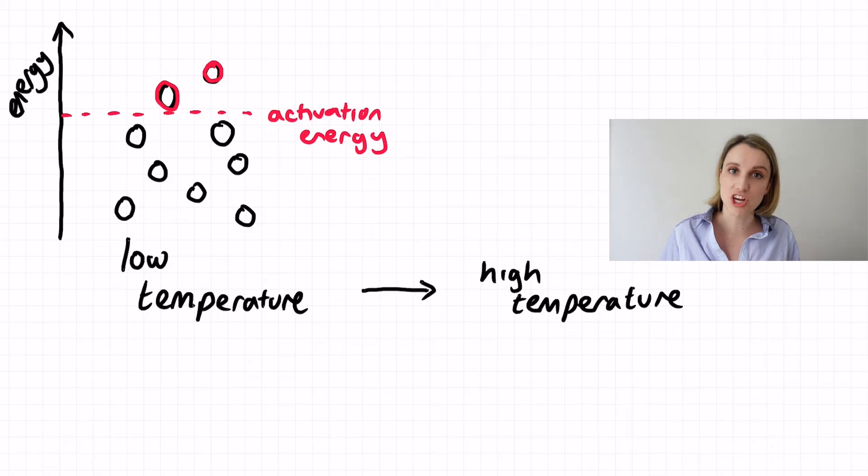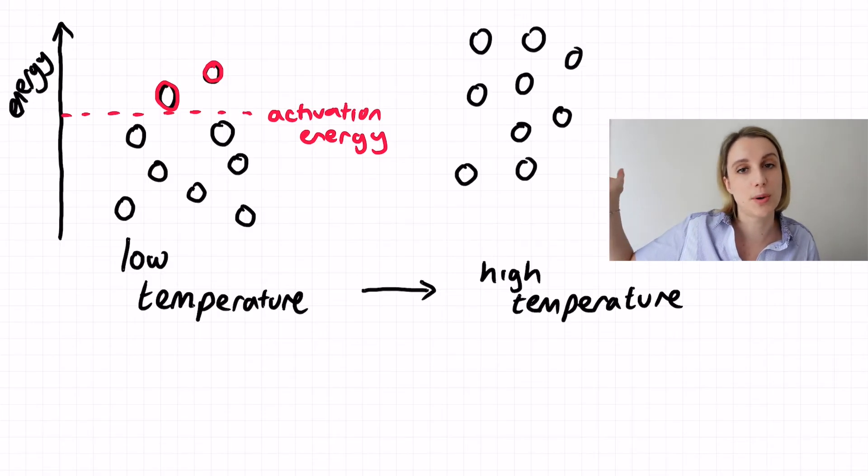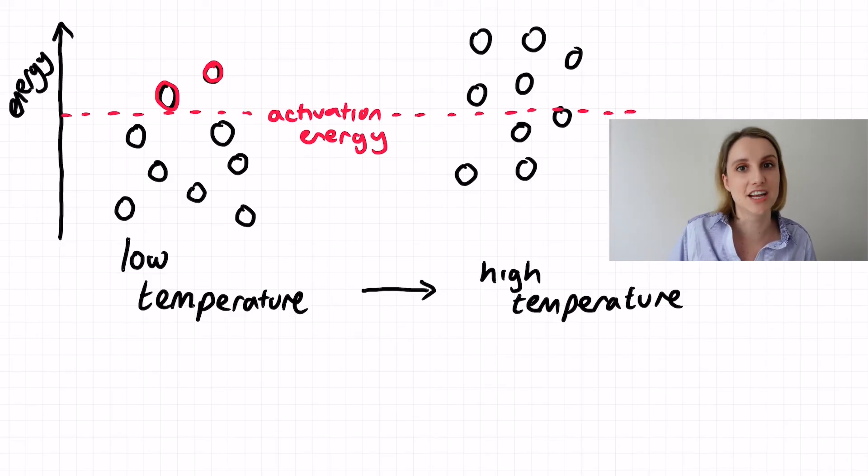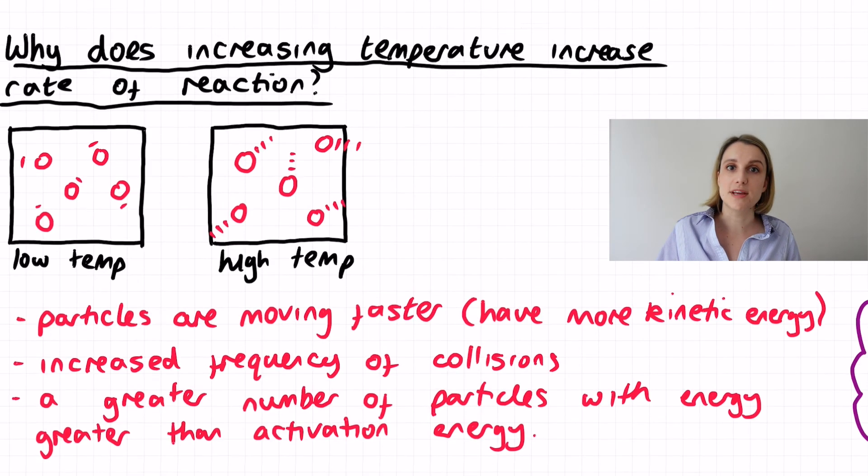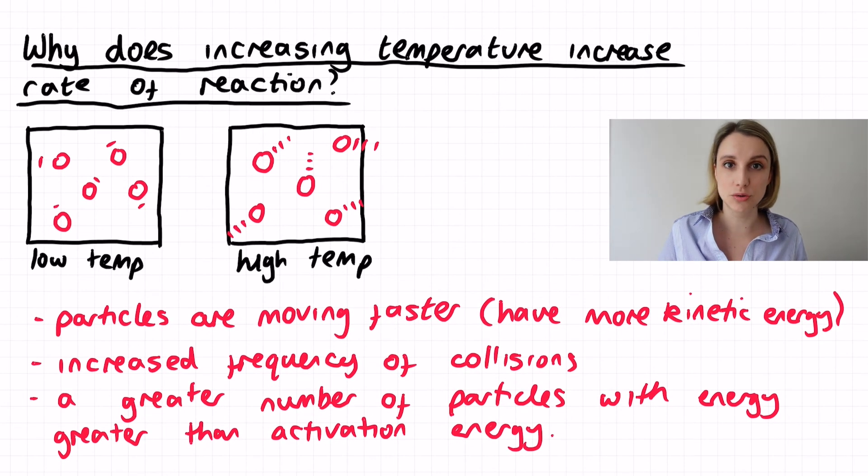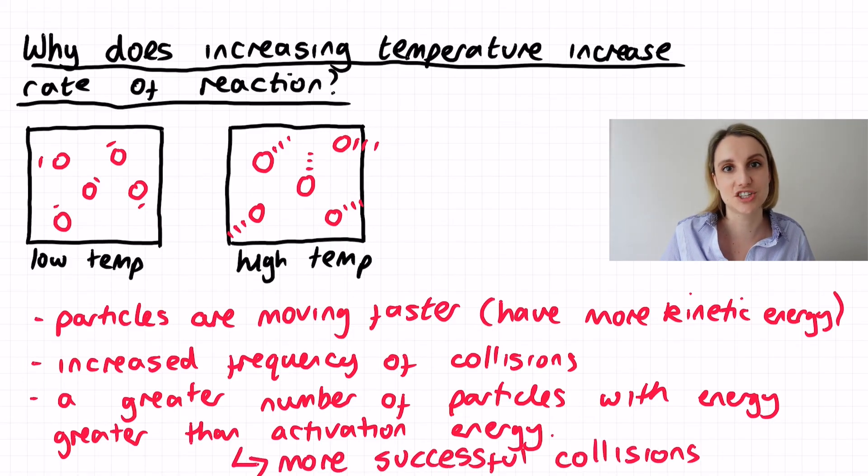So when I increase the temperature what I'm doing is I'm moving the average energy of those particles to a higher energy. So you can see I'm going to shift all of the particles upwards. What this means is that now more particles have a higher energy than the activation energy. So overall this means that you would have more particles engaging in successful reactions when they did collide with each other.